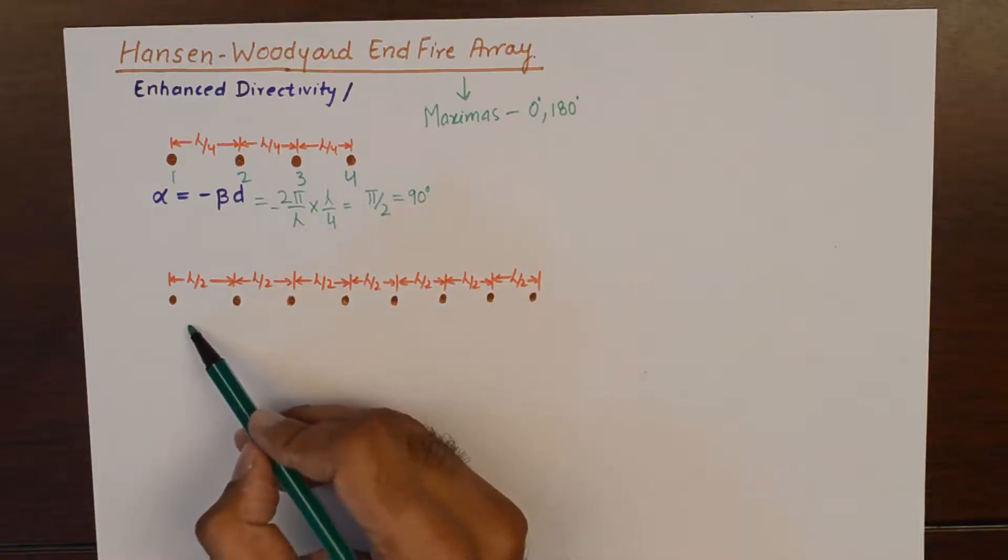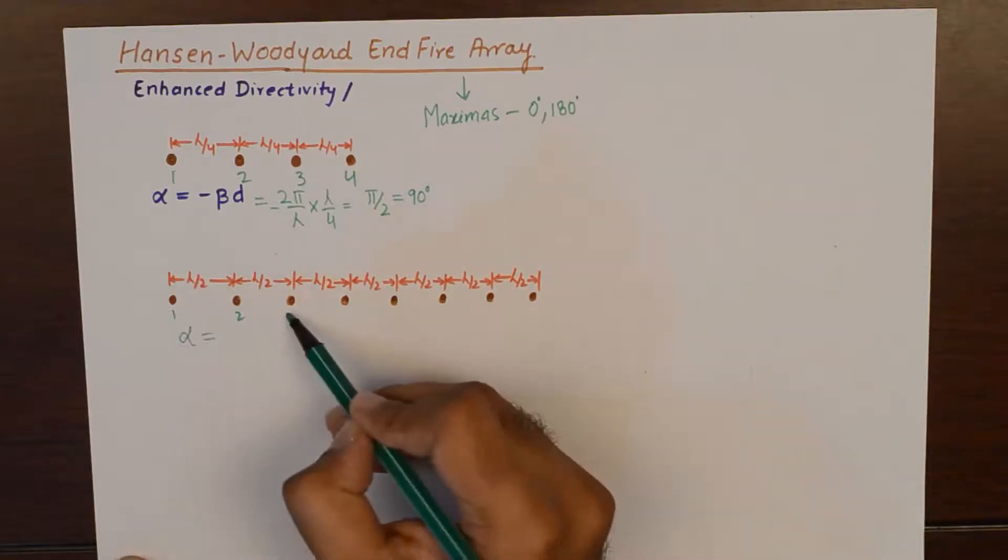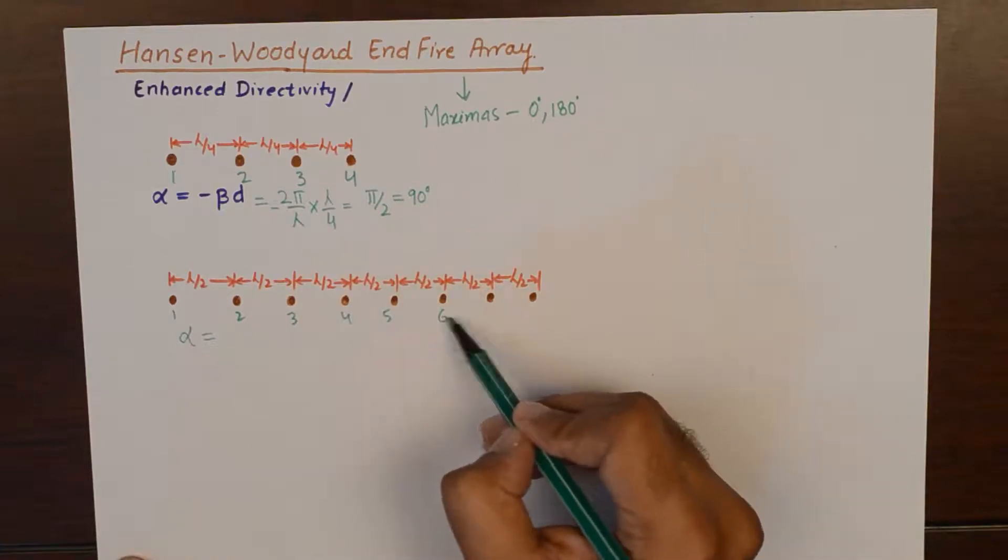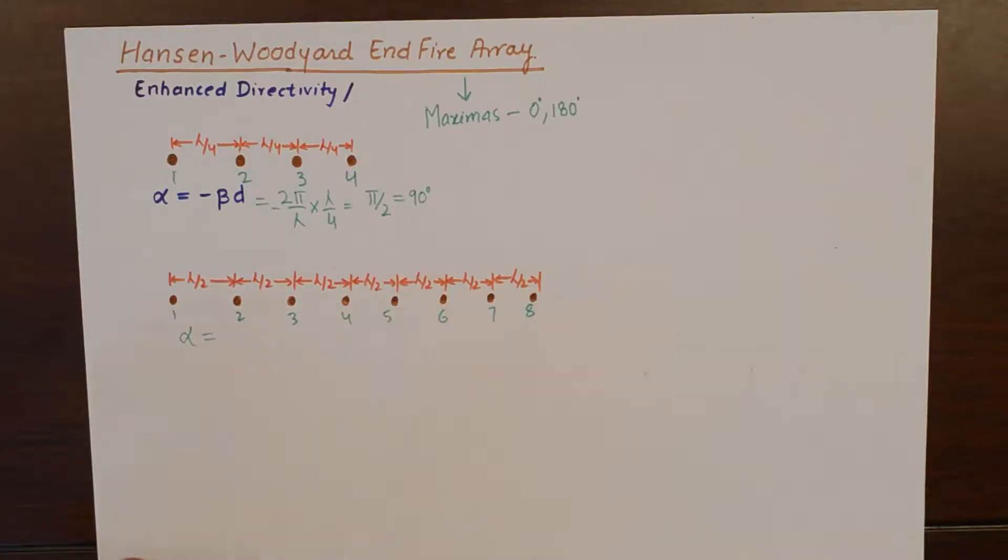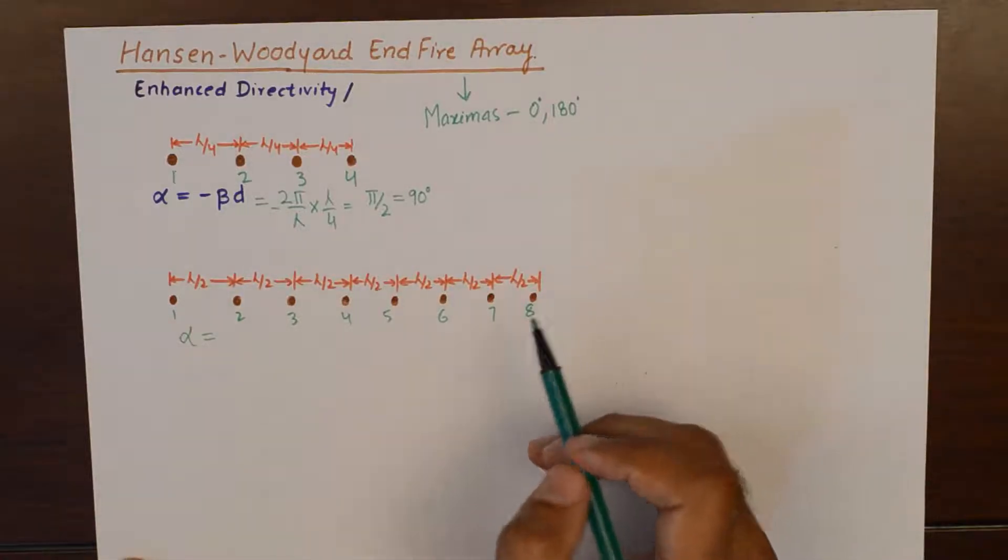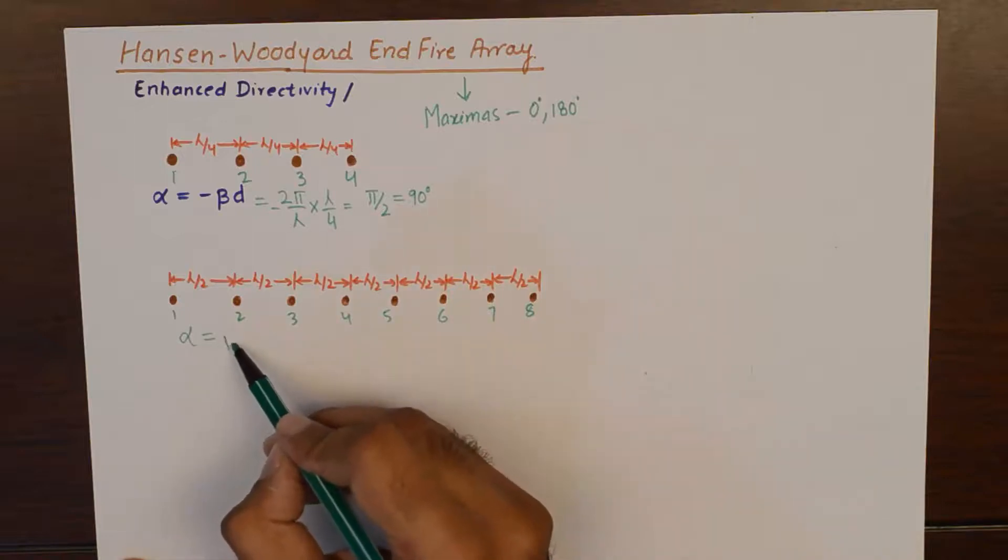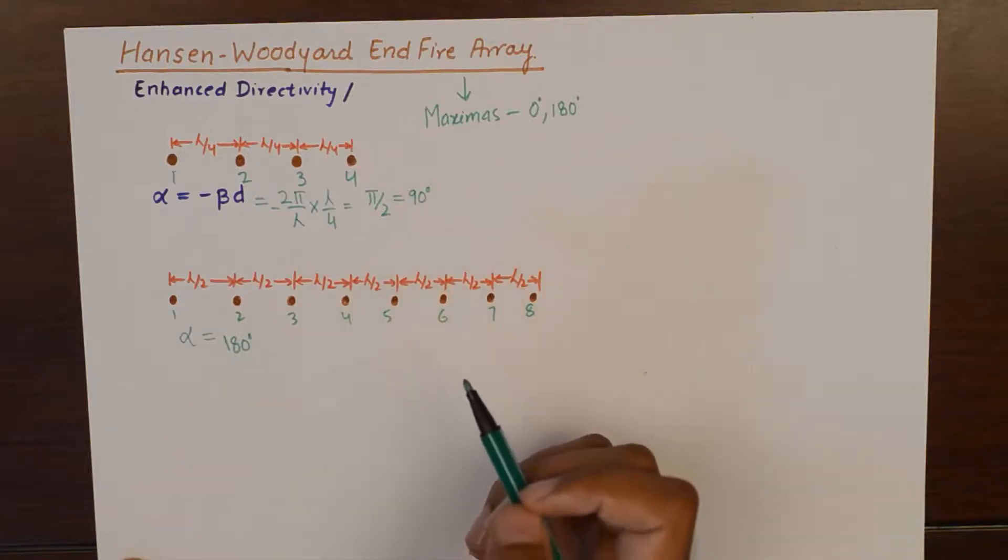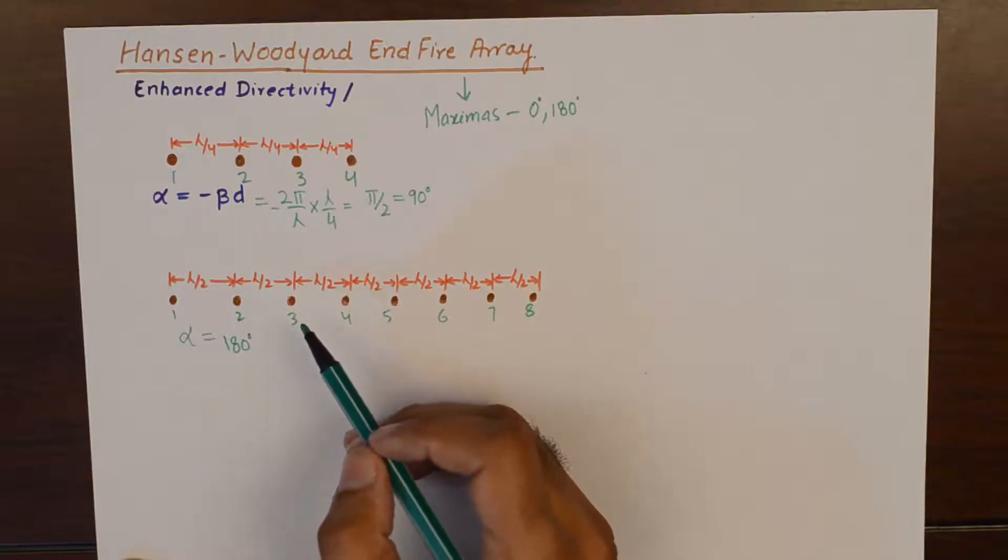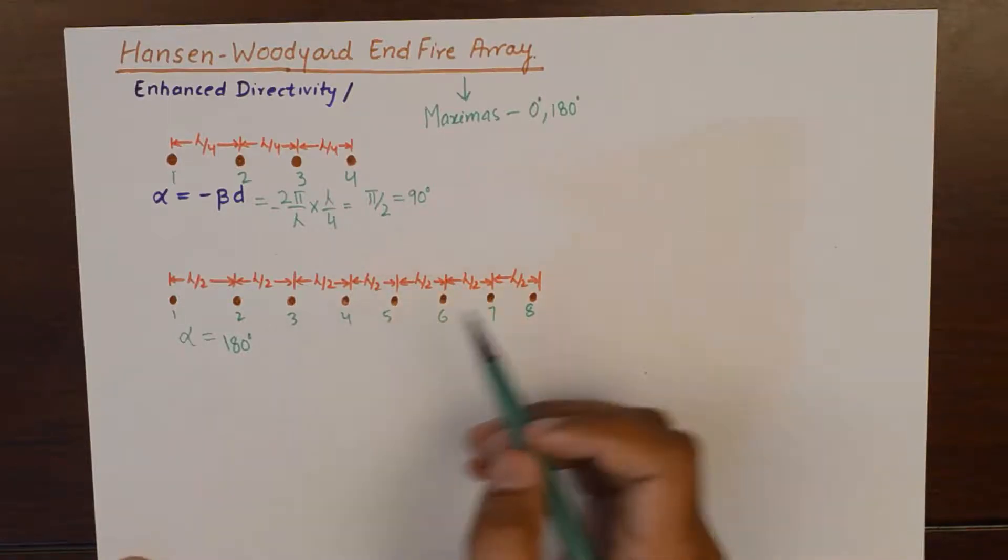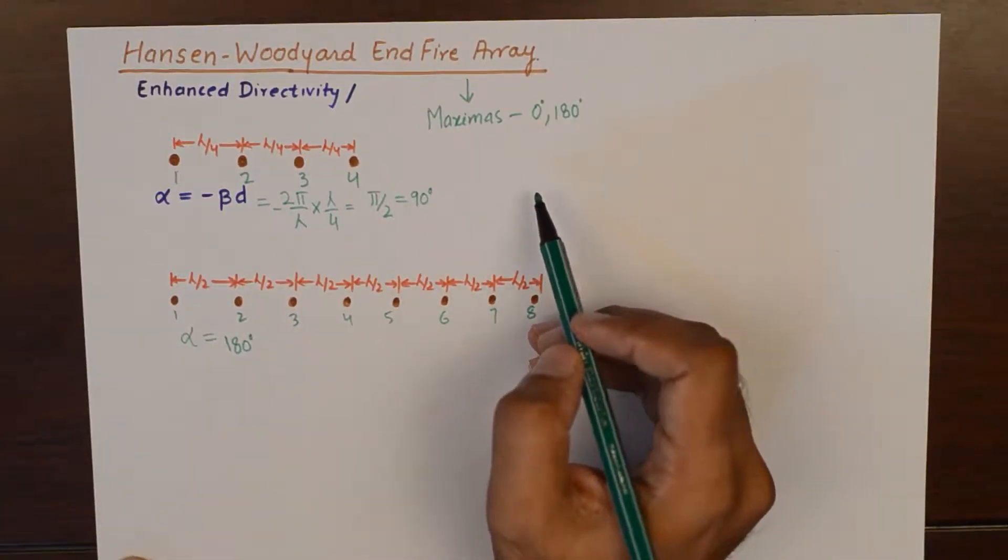Similarly, if we wanted to calculate for this case where we have 8 elements and they are separated by a distance of lambda by 2, the progressive phase shift would come out to be equivalent to 180 degrees. Now, the increase in the number of elements results in increased directivity but it also increased the number of side lobes.